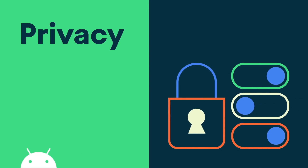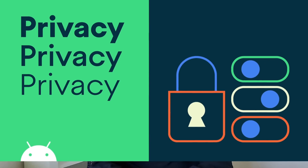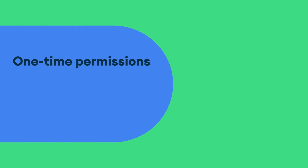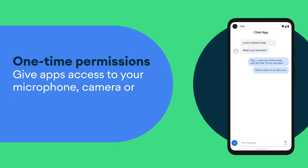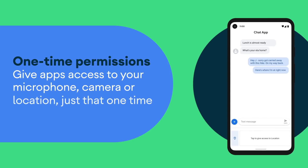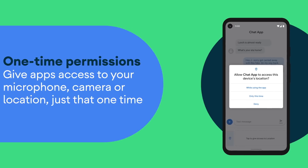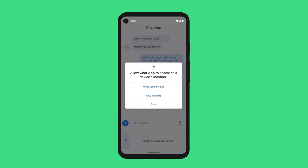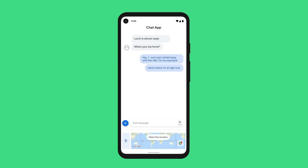Android 11 has a whole range of privacy features. The two main ones are one-time permissions and permissions auto reset. One-time permission allows a user to give an app access to the device microphone, camera, or location just that one time, which means when they leave the app they don't have to think about permissions anymore — it's automatically revoked for them.